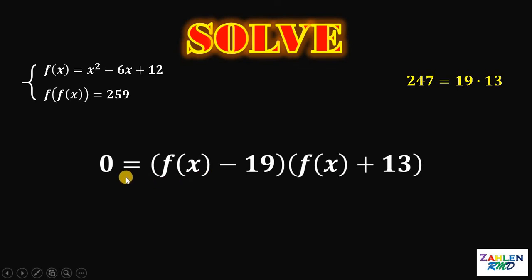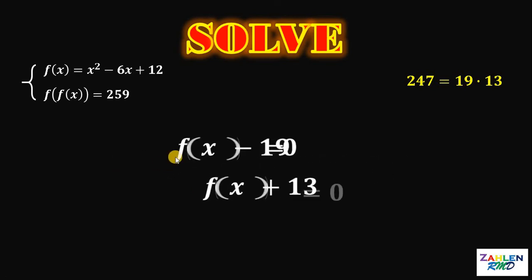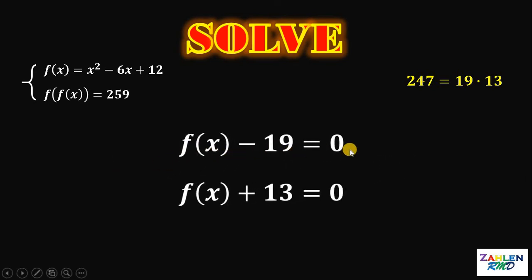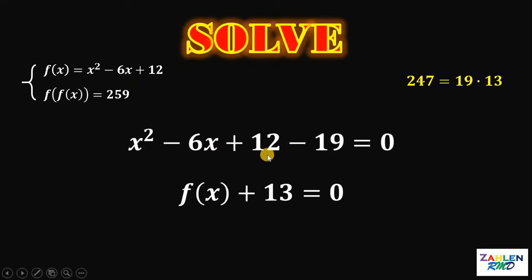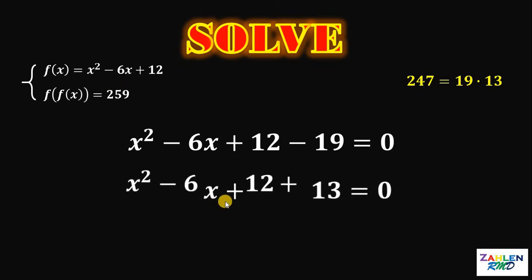Since it is equal to 0, at least one of them must be equal to 0. So we can say that f of x minus 19 equals 0, or f of x plus 13 equals 0. Now, we know the value of f of x — this is equivalent to x squared minus 6x plus 12. Therefore, this f of x can be replaced with x squared minus 6x plus 12 in both equations.